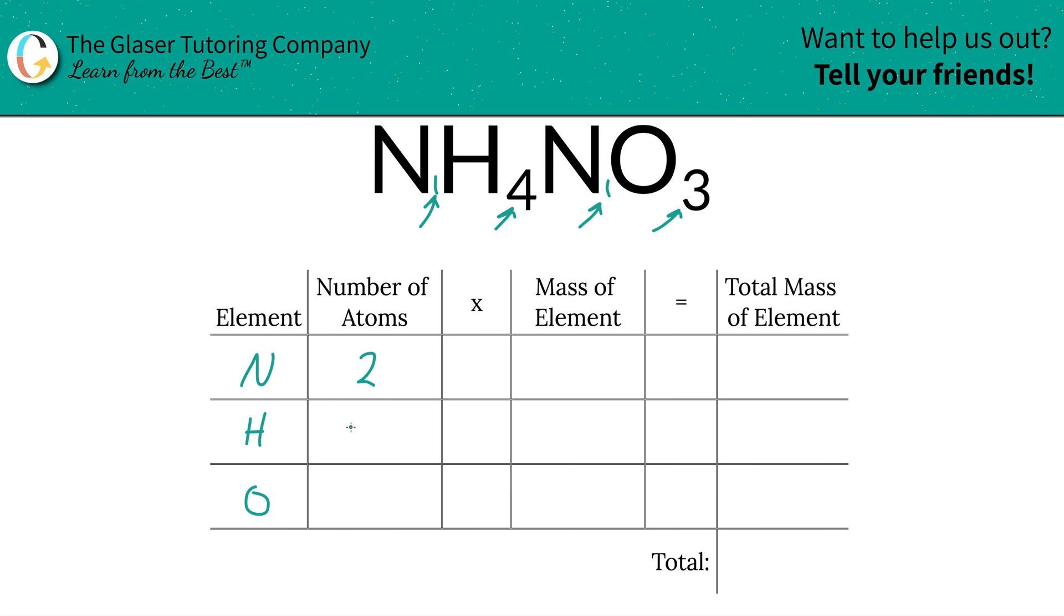Okay, reading way too many bedtime stories to my kids. Number of atoms for hydrogen, we have four, and then three for oxygen.